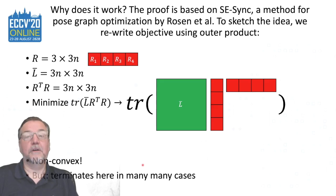How does this work? The proof is based on another method called SE-Sync by David Rosen, my co-author. And so to sketch out the proof, we'll just rewrite some of Frobenius norms as a trace of a sparse connection Laplacian and an outer product of the rotations concatenated in a long skinny matrix.